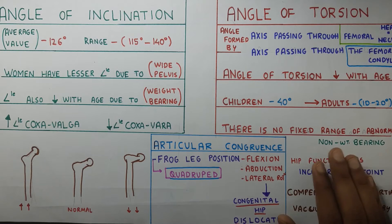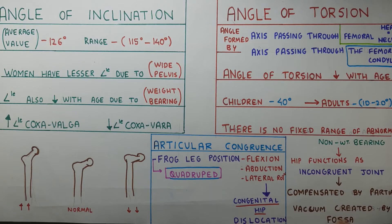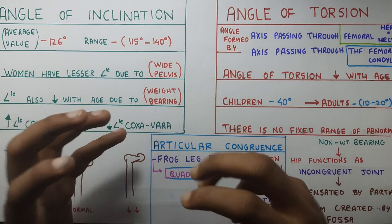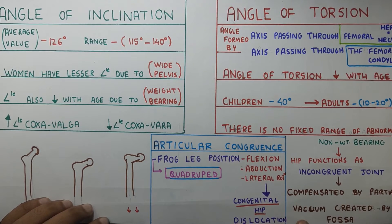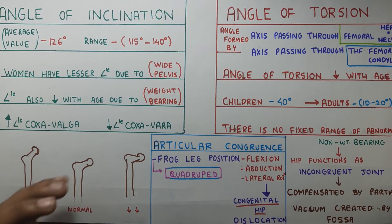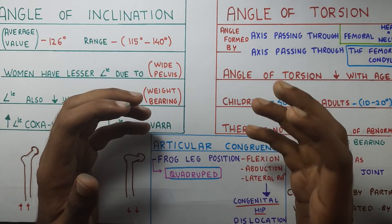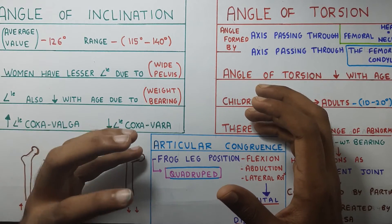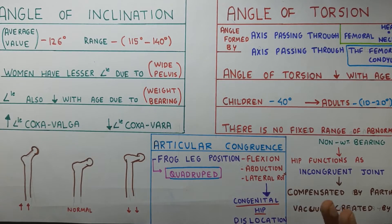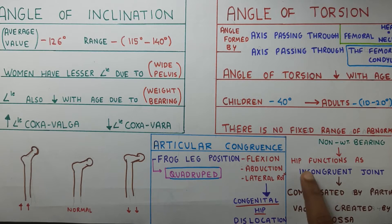In non-weight bearing positions, the hip functions as a very incongruent joint because of its big head and smaller acetabulum. This is compensated by a partial vacuum created by the acetabular fossa — similar to the shoulder joint, where a vacuum at the glenoid helps hold the humerus. In a similar manner, a partial vacuum at the acetabulum gives stability to the incongruent hip joint in non-weight bearing.